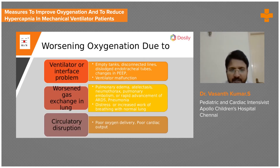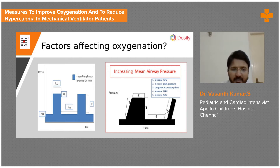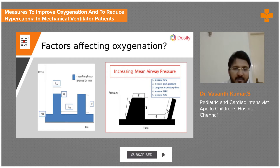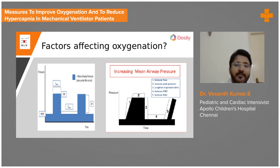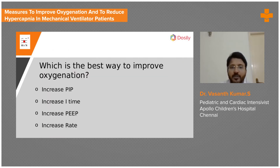Going back to the graph: oxygenation equals PEEP — just remember that. Whenever there is desaturation or a problem with oxygenation, increase the PEEP. By increasing the baseline itself, the overall height and therefore the overall area under the curve increases. That is why PEEP is the answer — PEEP is the best way to improve oxygenation.